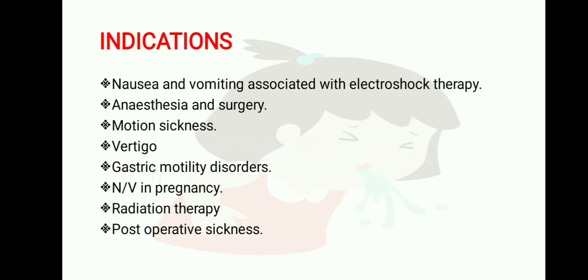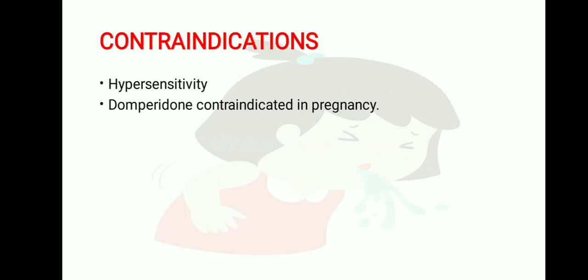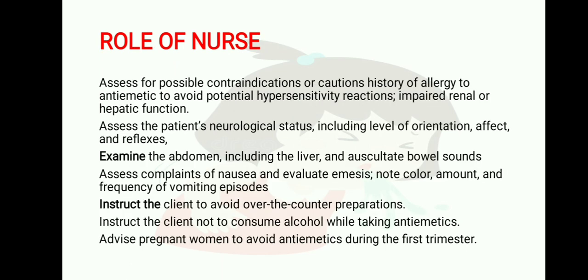Indications of anti-emetic drugs: nausea and vomiting associated with electroshock therapy, anesthesia and surgery, motion sickness, vertigo, gastric motility disorders, nausea and vomiting in pregnancy, radiation therapy, and post-operative sickness. Contraindications: hypersensitivity; domperidone is contraindicated in certain conditions in pregnancy. Role of nurse: assess possible contraindications, cause, and history of allergy to anti-emetics to avoid potential hypersensitivity reactions; assess impaired renal and hepatic function.